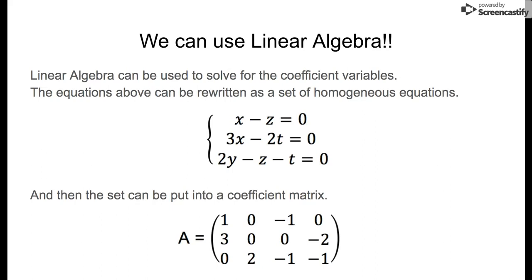The coefficient matrix: the left row is the coefficients of the first equation, so we have one x, zero y's, negative one z, and zero t's. On the second equation, we have three x, zero y's, zero z's, and negative two t's.